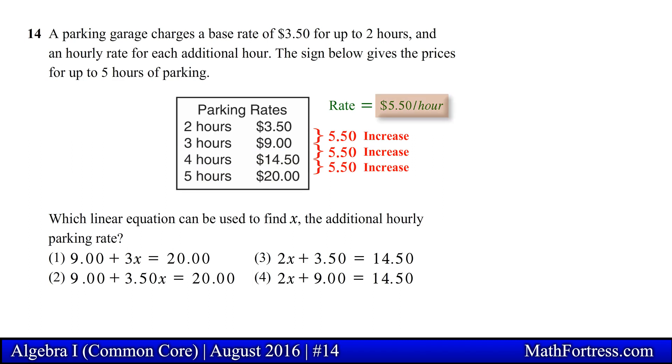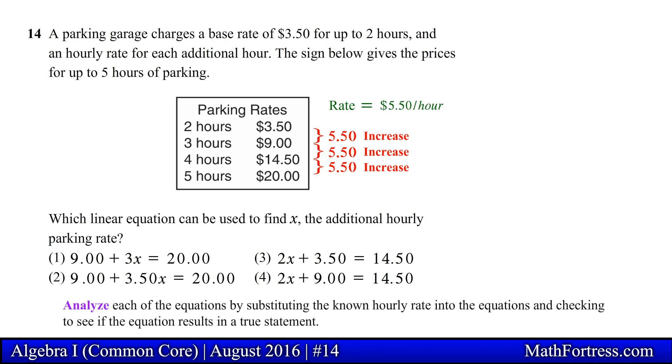Now we need to determine which of the 4 linear equations can be used to solve for x, where x represents the additional hourly parking rate, in this case $5.50. We can determine this by systematically solving for x in each linear equation until we find a match. We can also analyze each of the equations by substituting the known hourly rate, in this case $5.50, into the equations and checking to see if the equation results in a true statement.